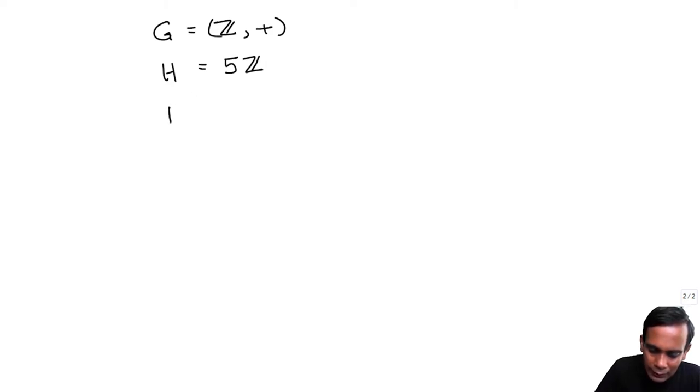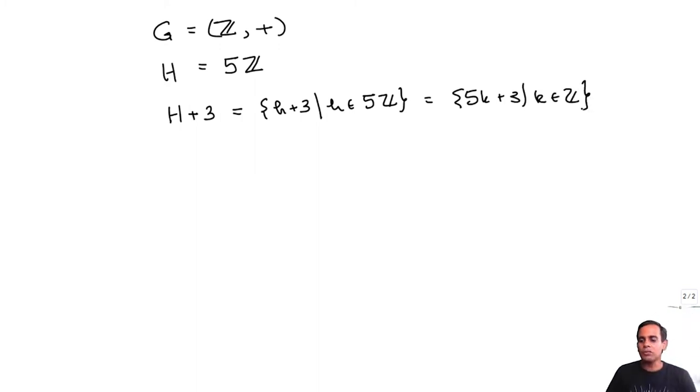So I want to write the coset H times 3. But since the group structure here is given by addition, I will write H plus 3. And this is equal to H plus 3 where H belongs to 5Z. This is also the same as 5k plus 3 where k is in Z. So this is just the set of all integers which leave a remainder 3 when divided by 5.